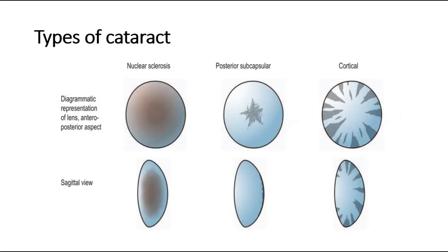There are a few types of cataract: the nuclear cataract, the posterior subcapsular cataract, and the cortical cataract. For nuclear cataract, the lens nucleus will become cloudy. For posterior subcapsular cataract, the cataract lies immediately deep to the posterior part of the lens capsule. You can see some grayish areas — that's the cataract.